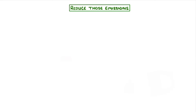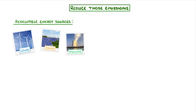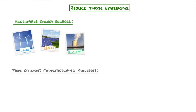One way to do this is to use renewable energy sources, like wind, solar, or nuclear energy, instead of using fossil fuels. Another option would be to use more efficient manufacturing processes, which require less energy in the first place, and also produce less waste.